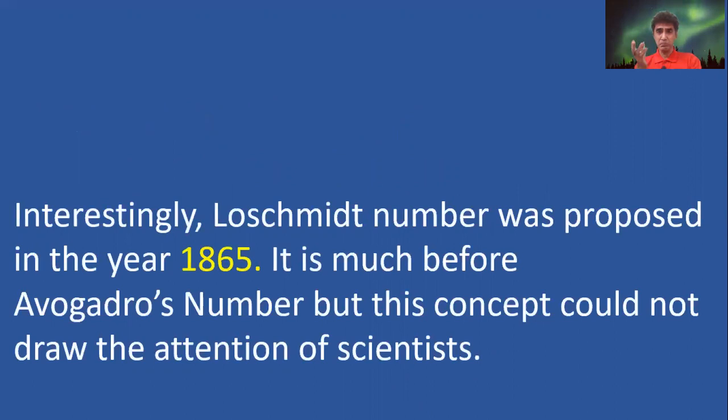Interestingly, Loschmidt's number was proposed in 1865, much before the advent of Avogadro's number.